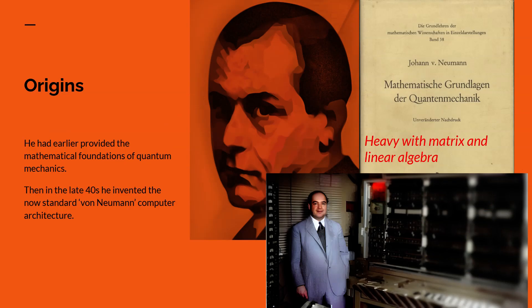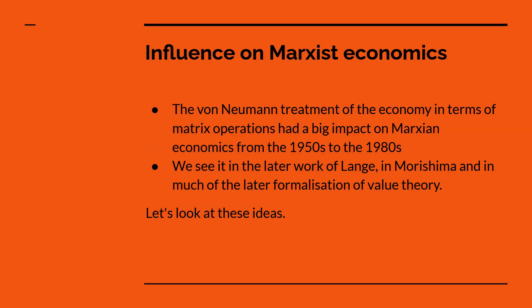He had earlier worked on quantum mechanics, his mathematical foundations of quantum mechanics. It's very heavy with matrix and linear algebra and later he went on to invent the von Neumann computer architecture which is the architecture we still use to this day. His treatment of the economy in terms of matrix operations had a big impact on Marxian economics from the 50s to the 80s and we see it in later books by Langer and Morishima and much of the formalization of value theory which occurred in the 80s to early 90s.